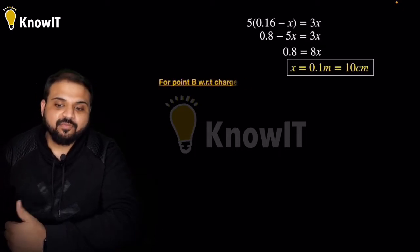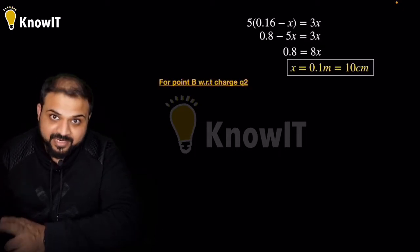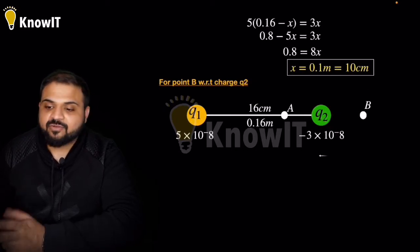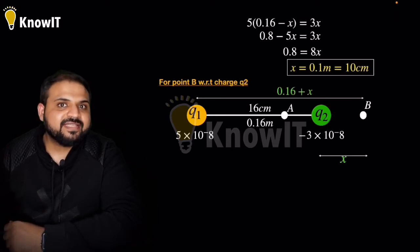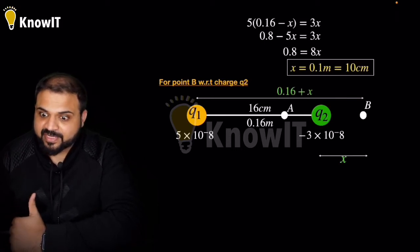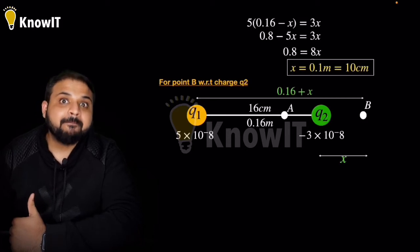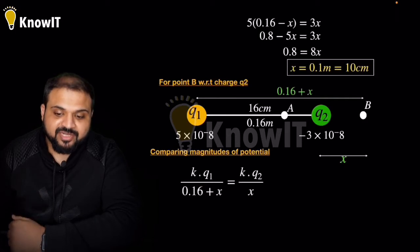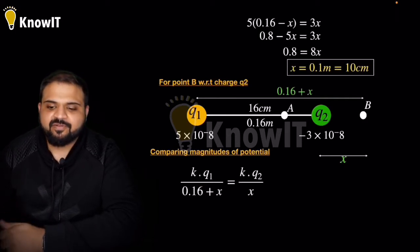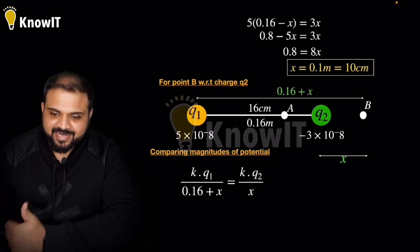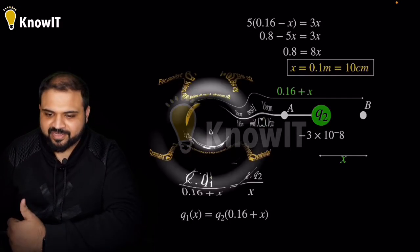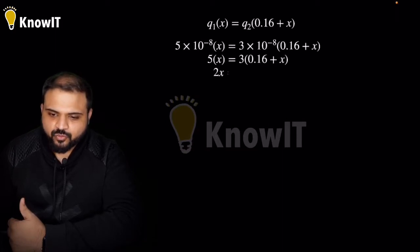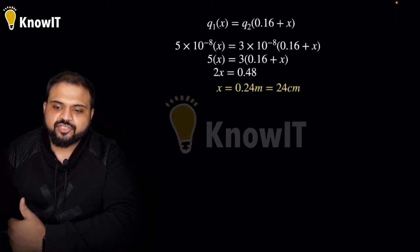Now we consider the next point — point B, with respect to charge Q2. With respect to Q2, the distance of point B is taken as X, so with respect to Q1 it will be 0.16 plus X (not minus X, because the point is beyond 0.16). Again comparing the magnitudes of potential: KQ1/(0.16 + X) = KQ2/X. Cancelling K and solving, X = 0.24 meter.